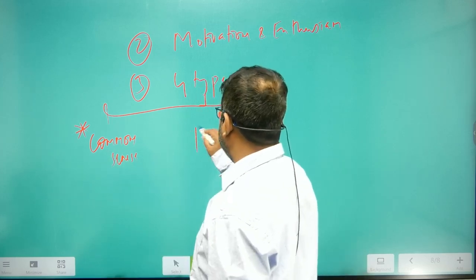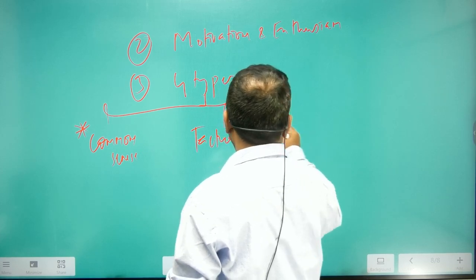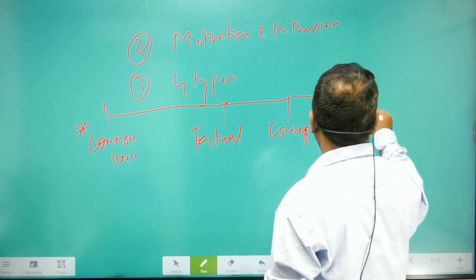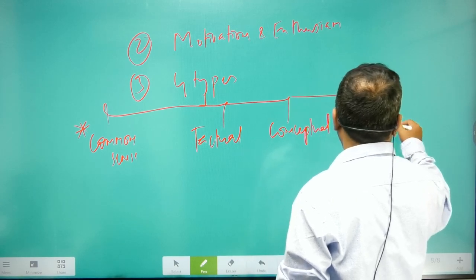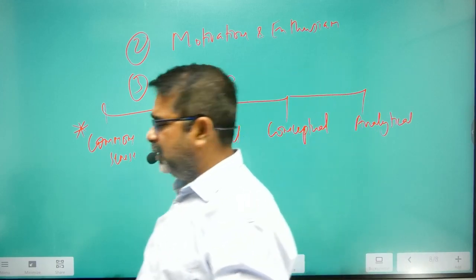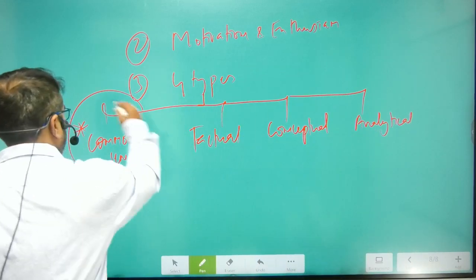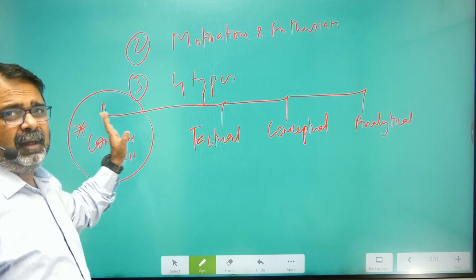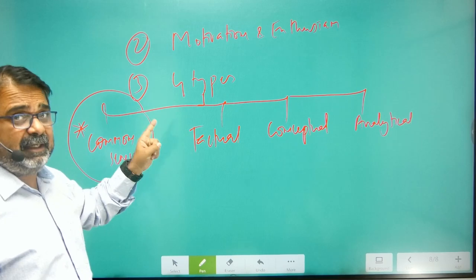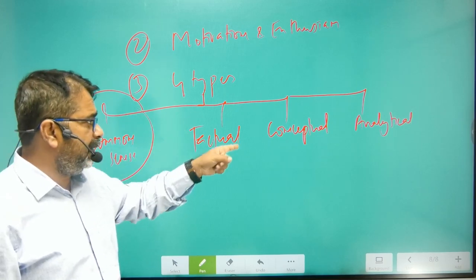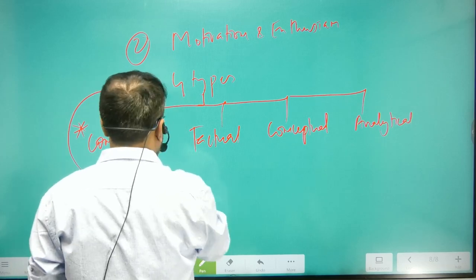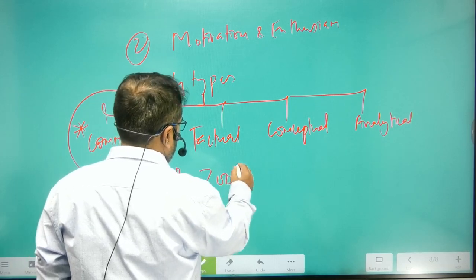Second: factual. Third: conceptual. And fourth: analytical. Common sense—the deciding factor of your selection. If you are not prepared you cannot qualify, that is different, but common sense questions are the deciding factor. Then factual, conceptual, and analytical. And this entire gift for you in just rupees 2100.